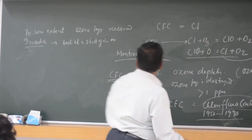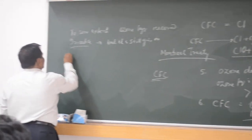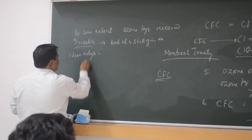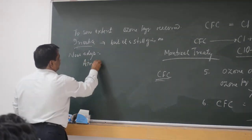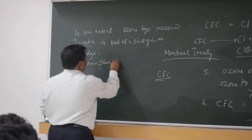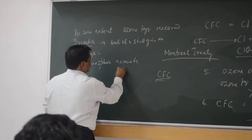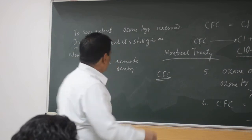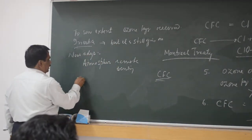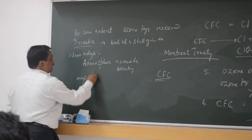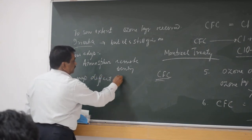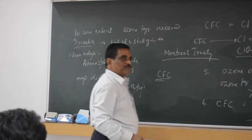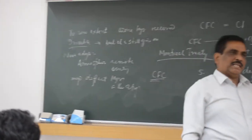That is why nowadays, this atmosphere is remote sensing. Satellite, they observe, they can map these layers. They can map different layers in the atmosphere. So ozone layer is mapped. There are some techniques.